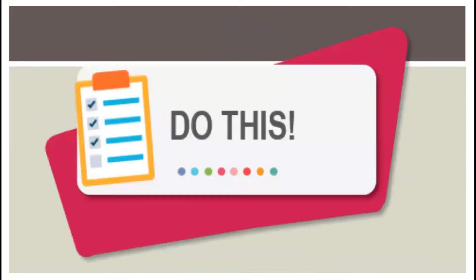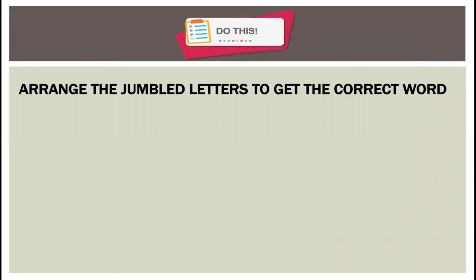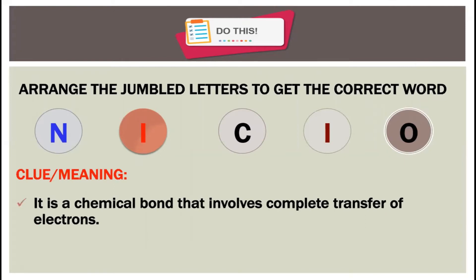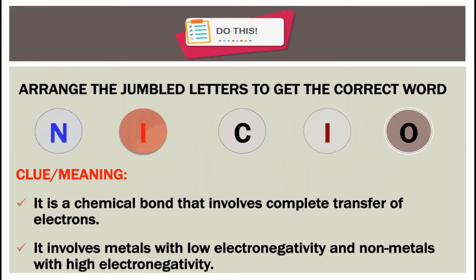Let us do the following activity. Please make sure you have your answer sheet and pen with you, and don't forget to submit your answer to your science teacher. Arrange the jumbled letters to get the correct word: N, I, C, I, O. The clue: it is a chemical bond that involves a complete transfer of electrons; it involves metals with low electronegativity and non-metals with high electronegativity. What do you think is the correct word?